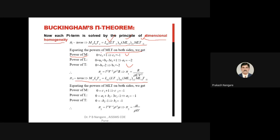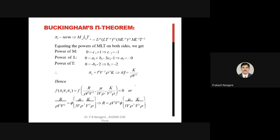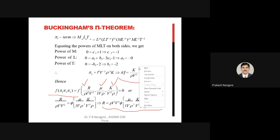Setting the power of M equal to 0, L equal to 0, and T equal to 0, you can find the values of a1, b1, and c1. Similarly, the same process applies to Pi2 and Pi3. The results are: Pi1 = R / (rho · l² · v²), Pi2 = mu / (rho · v · l), and Pi3 = k / (rho · v²). Therefore the final function is written as R = rho · l² · v² · phi(mu/(rho·v·l), k·v²/rho).